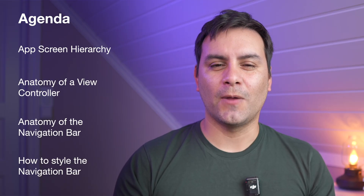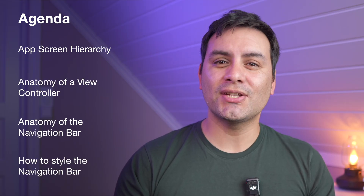I will explain this topic focusing on UIKit. The reason for that is that in UIKit we have more control of the navigation bar and there is a better API for styling it. There will be time codes if you want to watch a particular section. What I will talk about: the app screen hierarchy, the anatomy of a view controller, the anatomy of the navigation bar, and how to style the navigation bar.